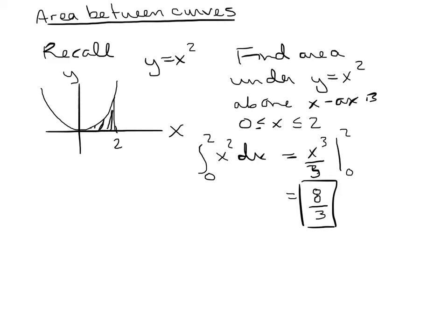What you're really doing is taking a little tiny slice that you would add up like a Riemann sum. The top of that slice is y equals x squared and the bottom is y equals 0, so the height of that slice is x squared minus 0.